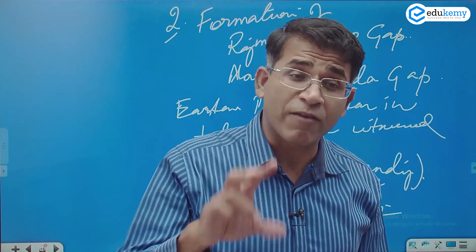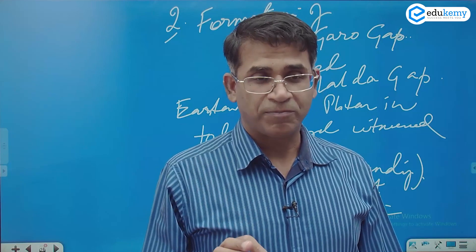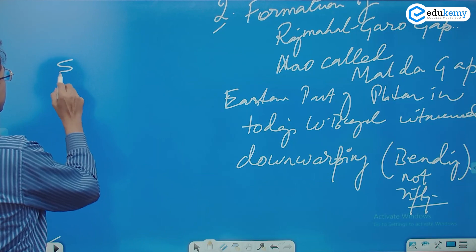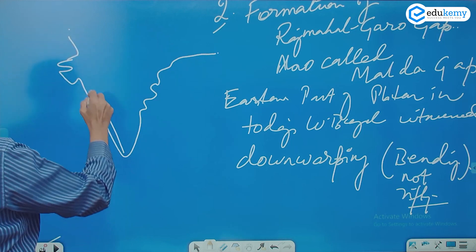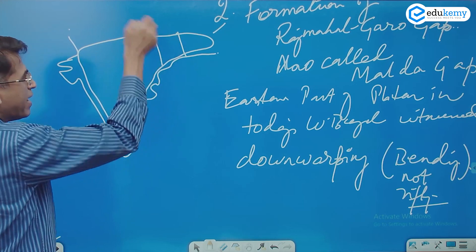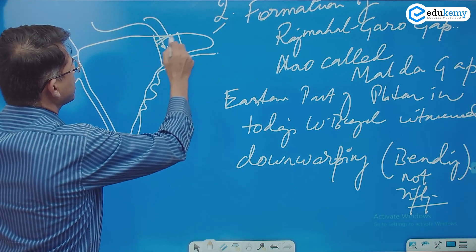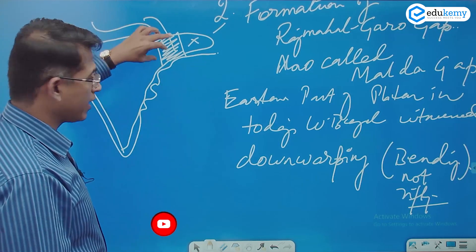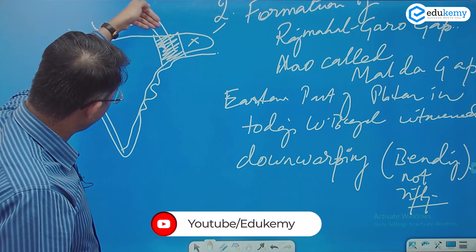The bending could be due to thermal factors — it is a tectonic event, but with no cracking, only bending. Imagine this is the whole plateau of India. For some reason this part underwent bending, and as a result the river starts flowing there. This part now has deposition and got separated from the rest of the plateau — that is West Bengal.